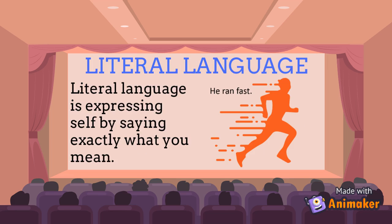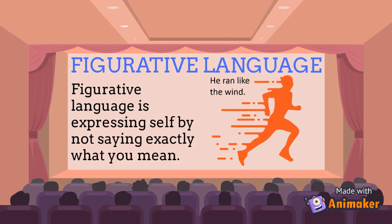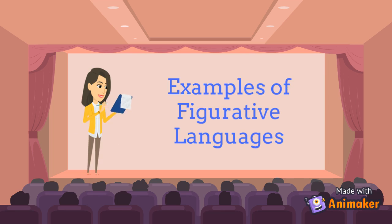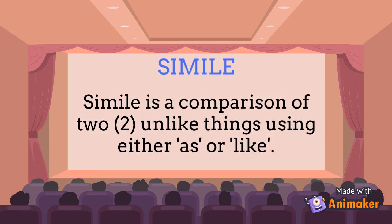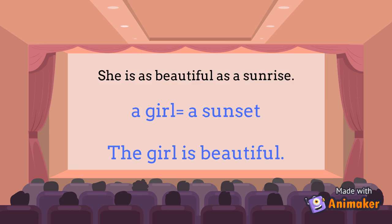Literal language: expressing yourself by saying exactly what you mean. Figurative language: expressing yourself by not saying exactly what you mean. Here are some figurative languages. Simile: a comparison of two unlike things using either 'as' or 'like.' For example, 'She's as beautiful as a sunrise' — the girl and the sunrise are being compared, and the speaker is saying that the girl is beautiful.